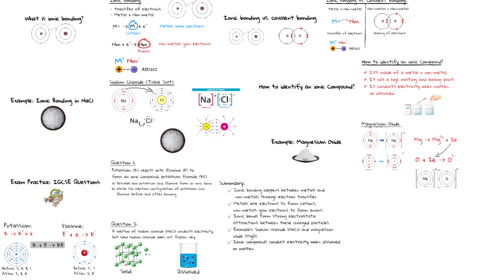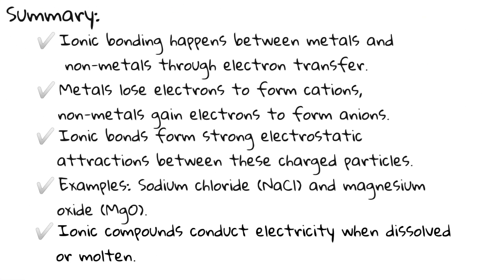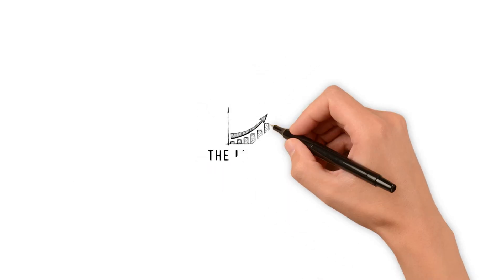Let's quickly recap what we've learned today. Ionic bonding happens between metals and nonmetals through electron transfer. Metals always lose electrons to form cations. Nonmetals always gain electrons to form anions. Ionic bonds form due to strong electrostatic attractions between these oppositely charged particles. Ionic compounds conduct electricity only when dissolved or molten.